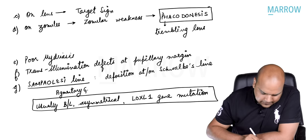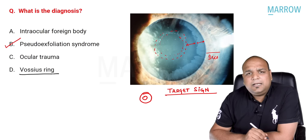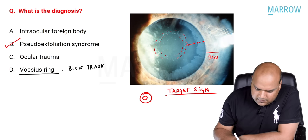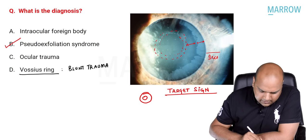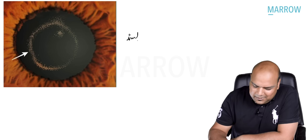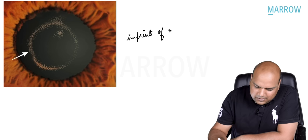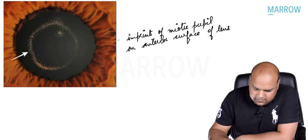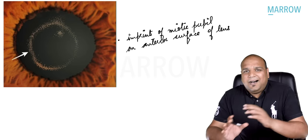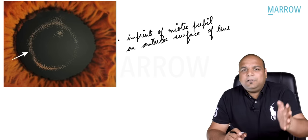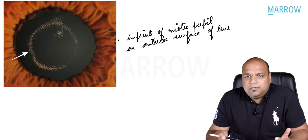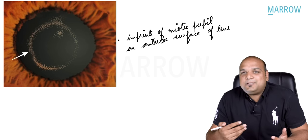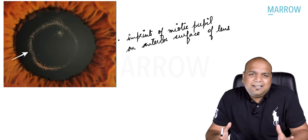Now going back to the options, one option was Vossius ring. Vossius ring is a sign of blunt trauma — it is an imprint of the miotic pupil on the anterior surface of the lens. The image of Vossius ring was given in NEET 2021 for identification. This time, Vossius ring was an option but the identifier was changed to the target sign. Everything you know is going to get asked — it's all about revision.